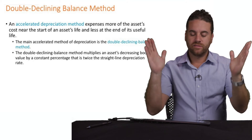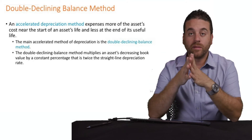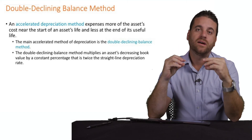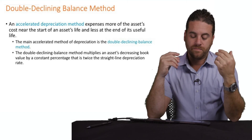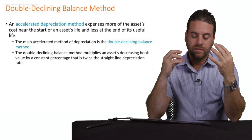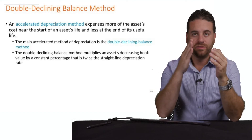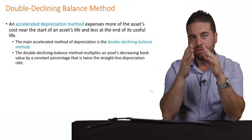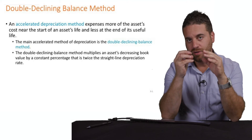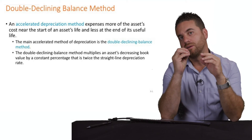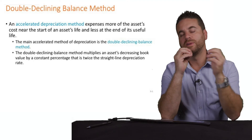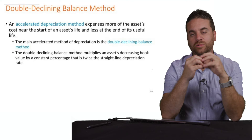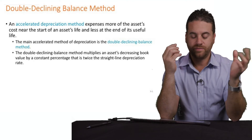The reason it's called double is because we start with the straight-line rate — dividing by the useful life — and then we double that amount. We multiply it by two, which gives us the depreciation expense for that year.